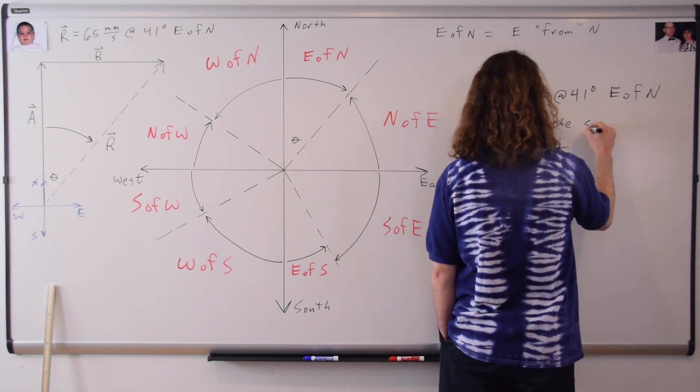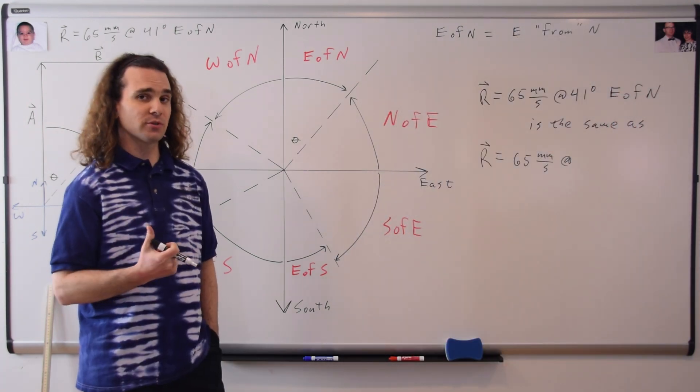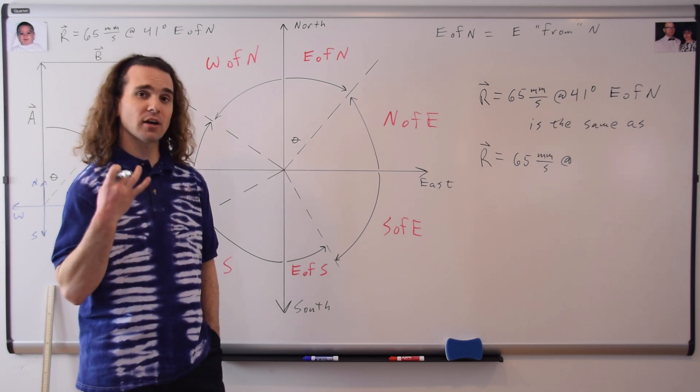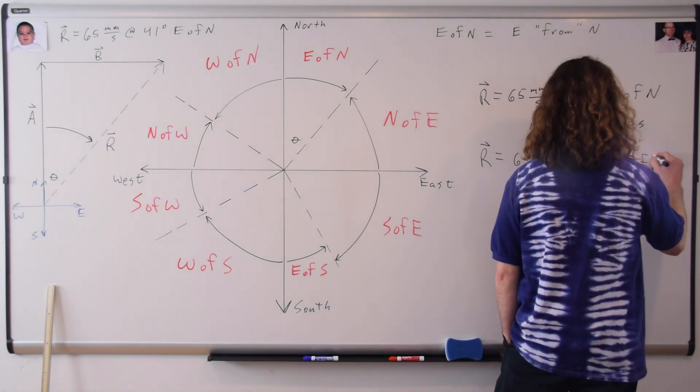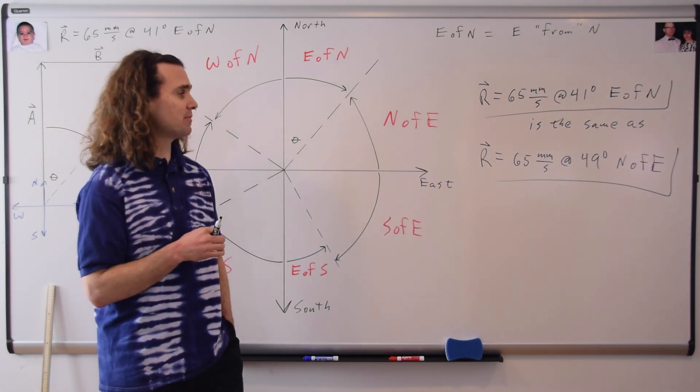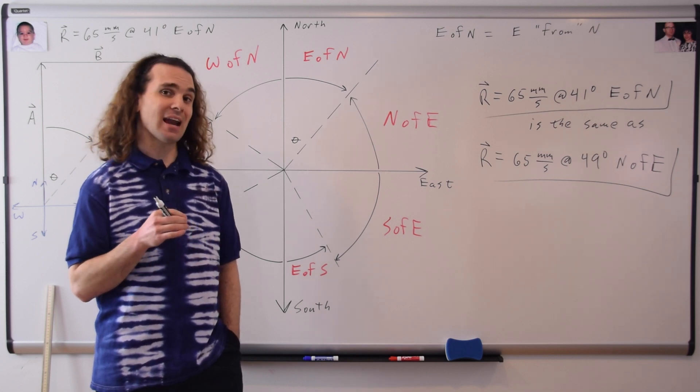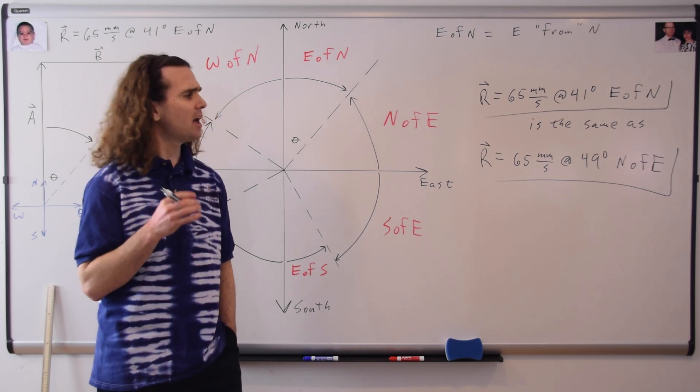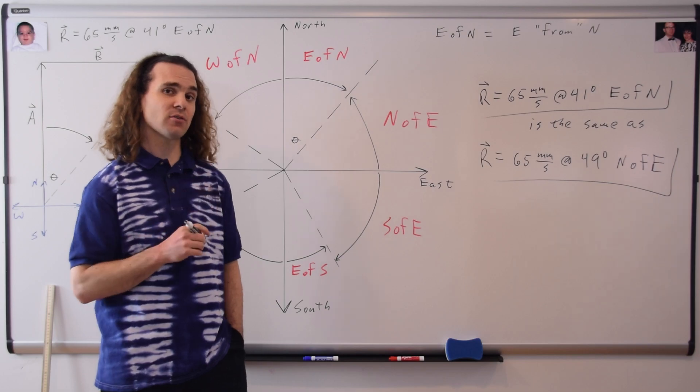We could describe this resultant vector with what other equivalent angle? It's 49 degrees north of east. Correct. We could also describe this vector as 65 millimeters per second and an angle of 49 degrees north of east. And Bobby, how did you get 49 degrees?